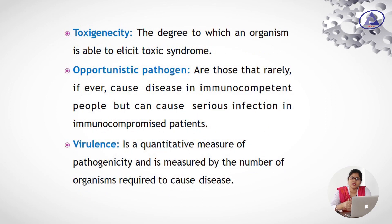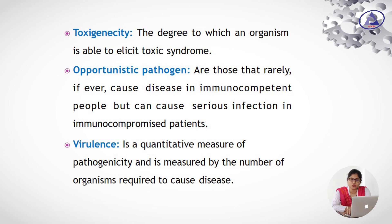What is toxigenicity? The degree to which an organism is able to elicit toxic syndrome. Opportunistic pathogens are those that rarely, if ever, cause disease in immunocompetent people, but can cause a serious infection in the case of an immunocompromised patient.